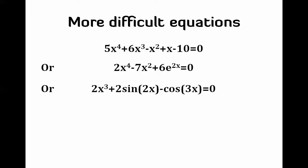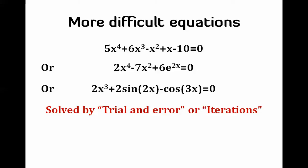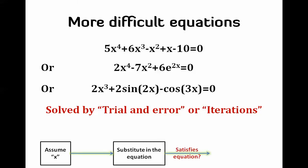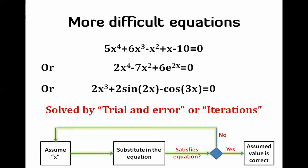The way you solve them is by doing trial and error, or an iterative solution. You assume a value of the variable x and check if it satisfies the equation — if substituting it makes the right-hand side equal to the left-hand side. If not, which is the most probable outcome, you reassume a value and redo the calculations, repeating this many times until you reach the right solution.